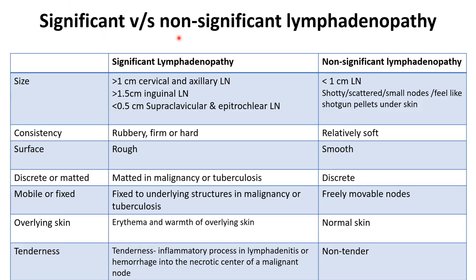The difference between significant and non-significant lymphadenopathy is determined by size, consistency, surface, whether discrete or matted, mobile or fixed, overlying skin, and tenderness. We label as significant lymphadenopathy whenever cervical and axillary lymph nodes are more than 1 cm in size. Inguinal lymph nodes more than 1.5 cm are considered significant. Supraclavicular and epitrochlear lymph nodes, if palpable, are always pathological — even less than 0.5 cm is considered pathological.